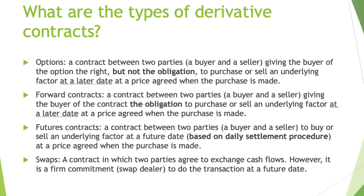The third one is the future contract. A contract between two parties, a buyer and a seller, to buy or sell an underlying factor at a future date. This one is based on a daily settlement procedure, which we will see in another video, at a price agreed when the purchase is made.